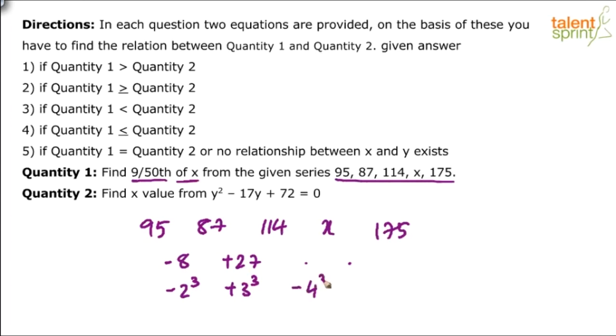So probably the next one should be minus 4 cube and it should be plus 5 cube. If these satisfy the given sequence, then we know what is x. So try it out. See, minus 4 cube is minus 64. What is 114 minus 64? We make x as 50. And then plus 5 cube, which is plus 125. 50 plus 125 equals 175. So is it balanced or not? Balanced. So I've got to know that x is equal to 50.